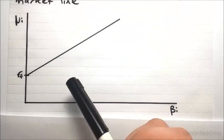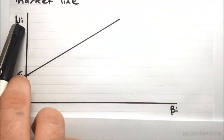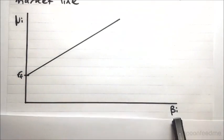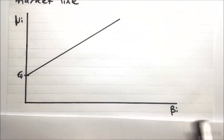The security market line deals with individual securities, and it also doesn't have variance or standard deviation, I should say, on the horizontal axis. It has this beta, which is something we're going to introduce today.